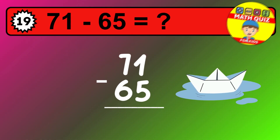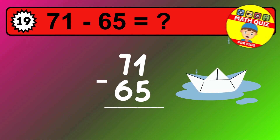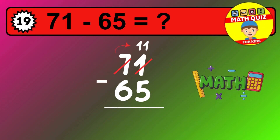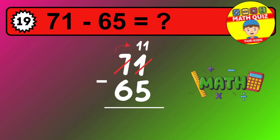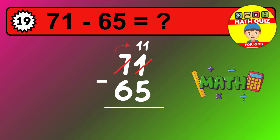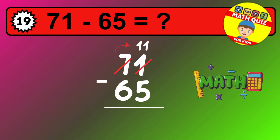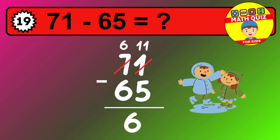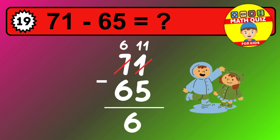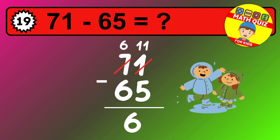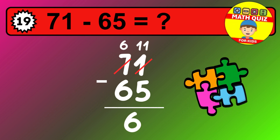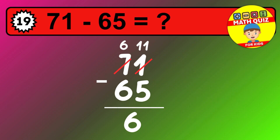Let's solve this step by step. We start with the units. One minus five is not possible, so we need to regroup. We take one ten from the tens column. Now we have six tens, and the units become eleven. Now we subtract. Eleven minus five is six. Then we go to the tens. Six minus six is zero. The final answer is six.